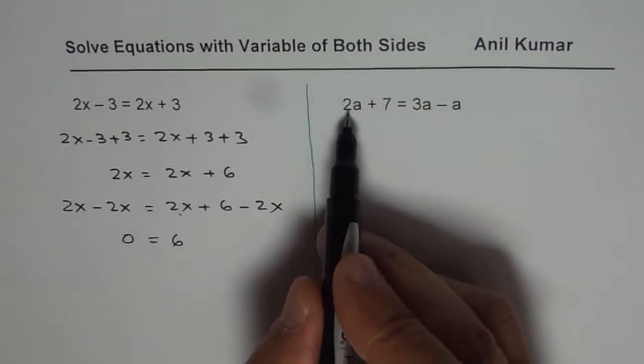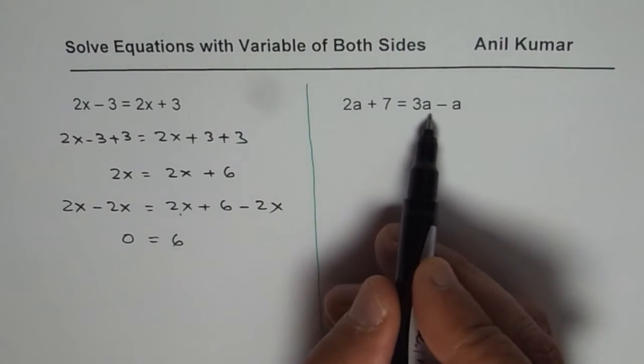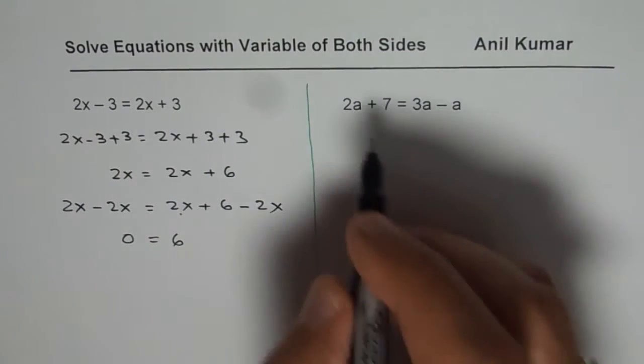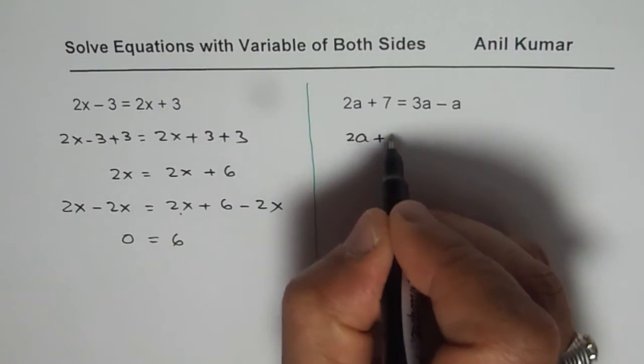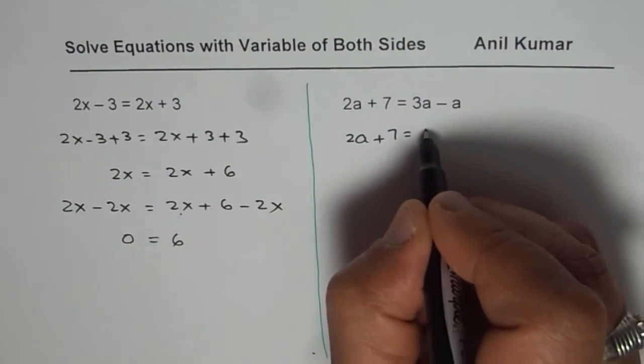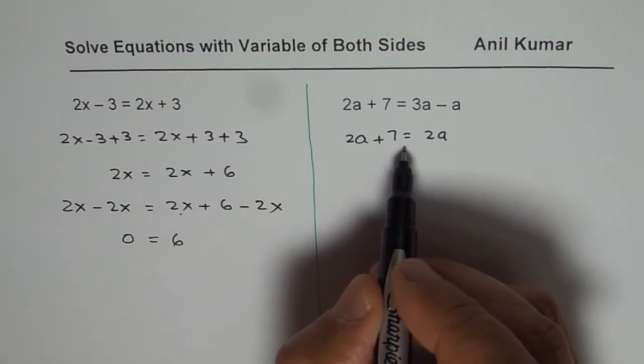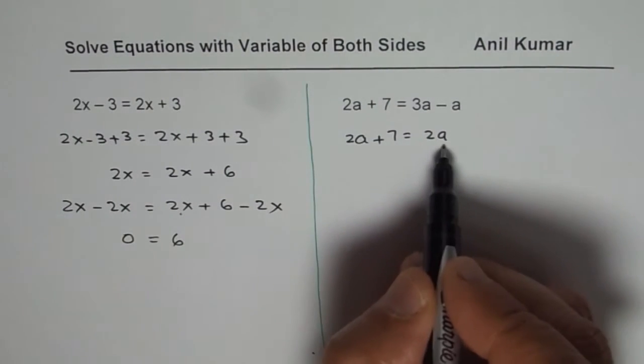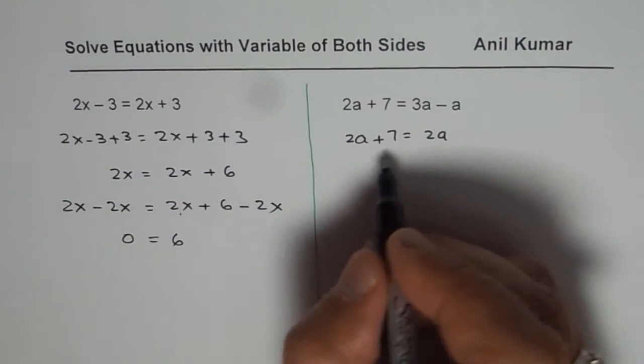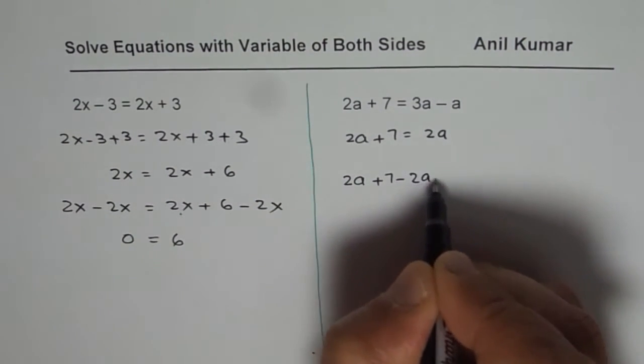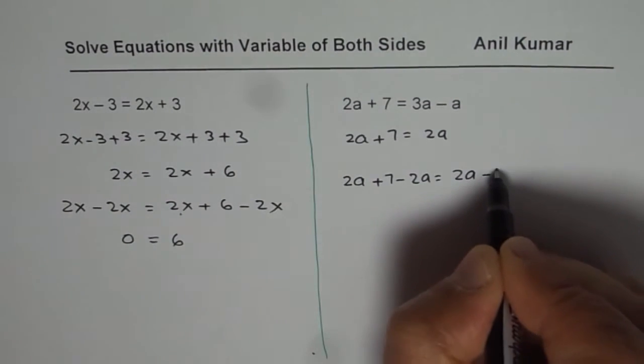Here we have 2a plus 7 equals to 3a minus a. So let us solve for 3a minus a. So we have 2a plus 7 equals to 3a minus a is 2a. Now what can we do? We can actually take away 2a from both sides. So if I take away 2a from both sides, I get 2a plus 7 minus 2a equals to 2a minus 2a.